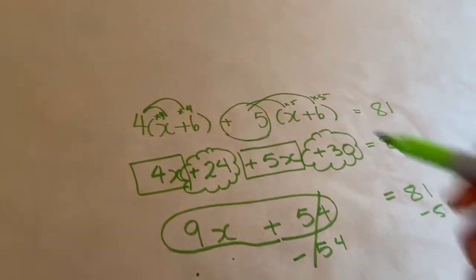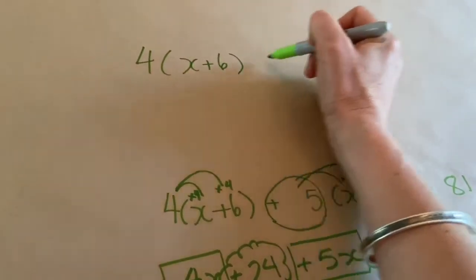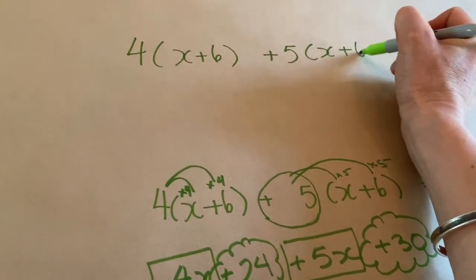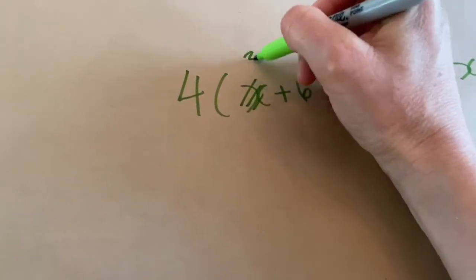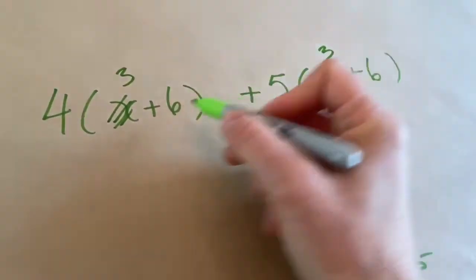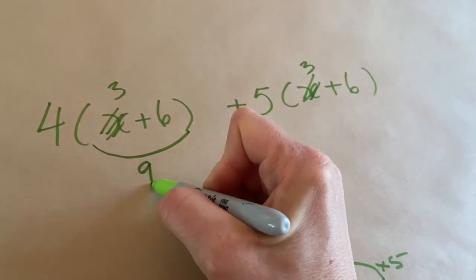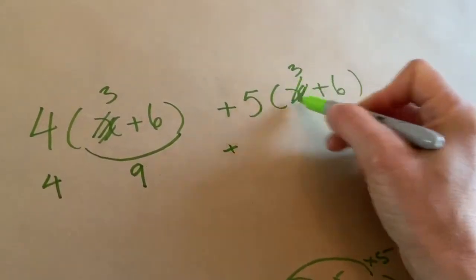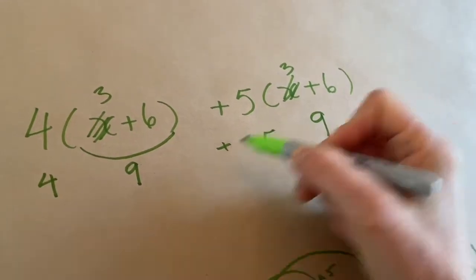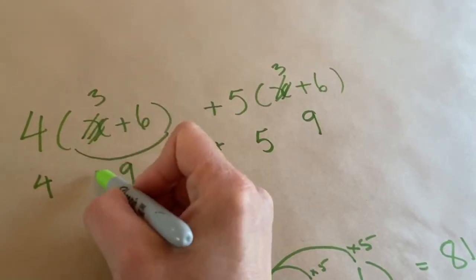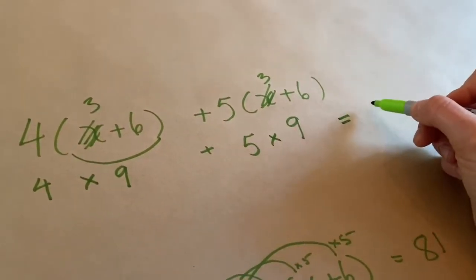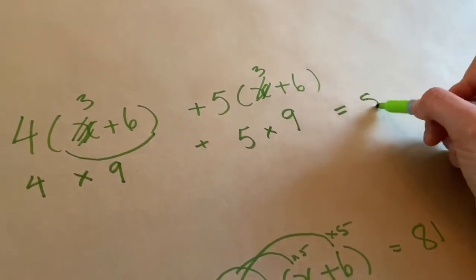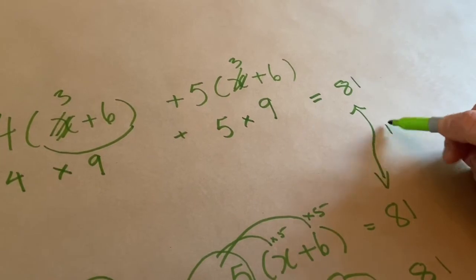Another way you can check is start with the original equation, 4(x+6) + 5(x+6), and put our answer for x into the equation. We know that x should equal 3. So I'm going to put a 3 here and a 3 here. 3 plus 6 equals 9. So what I want to do between these two, I'm multiplying: 4 times 9 plus 5 times 9. If you use a calculator, you get 81. So yes, I've got the right answer.